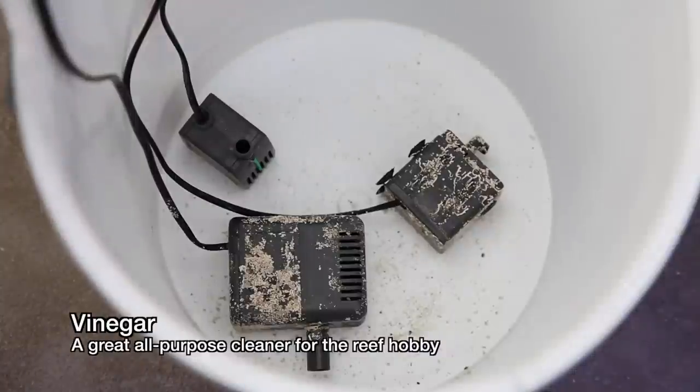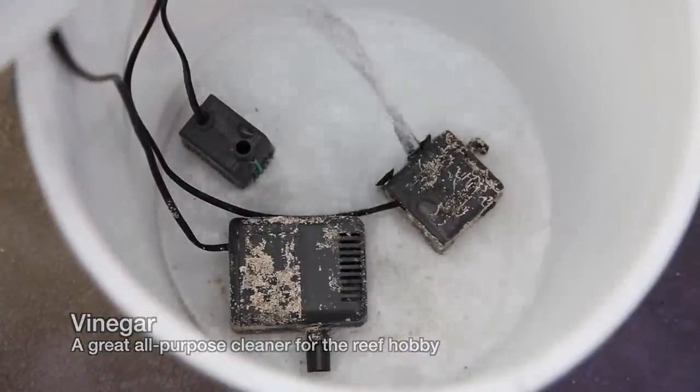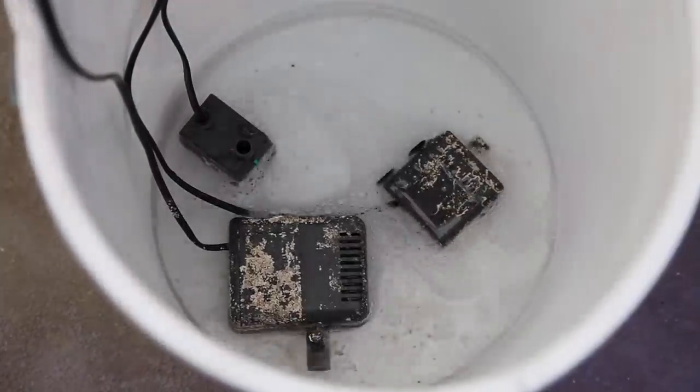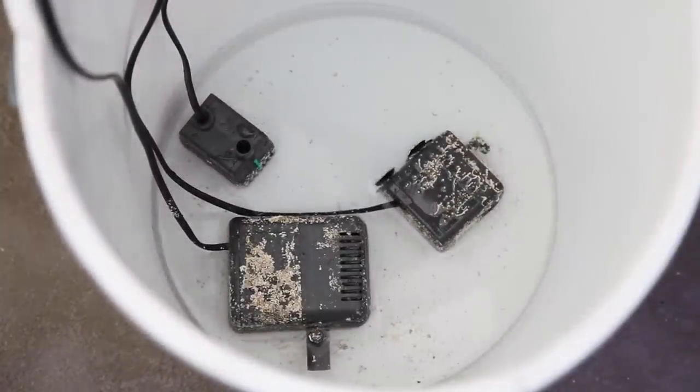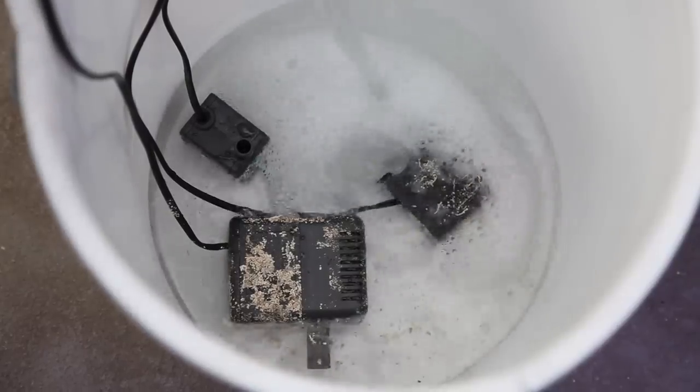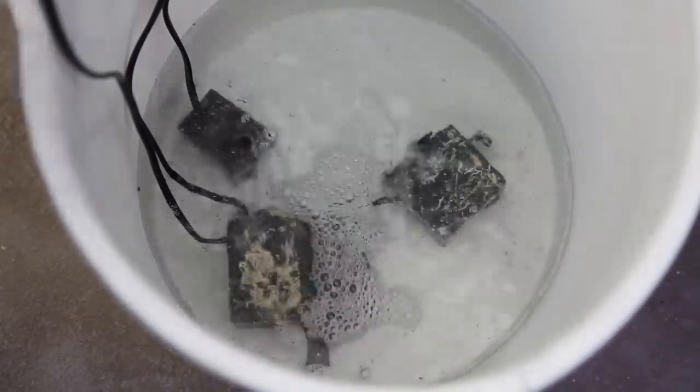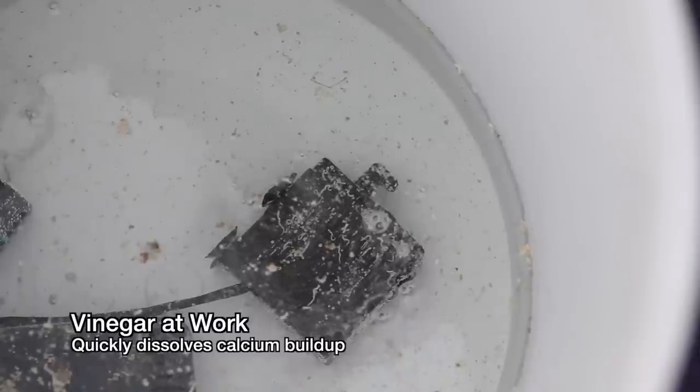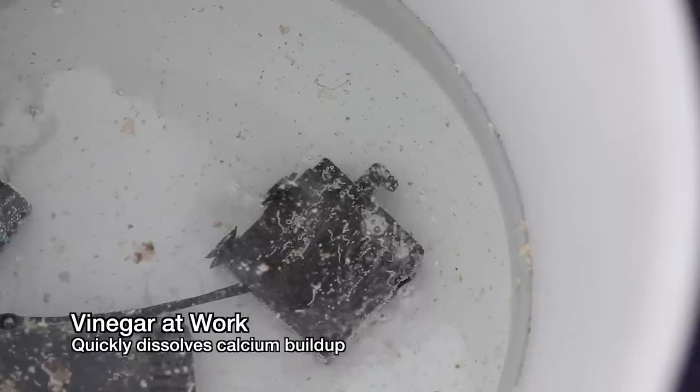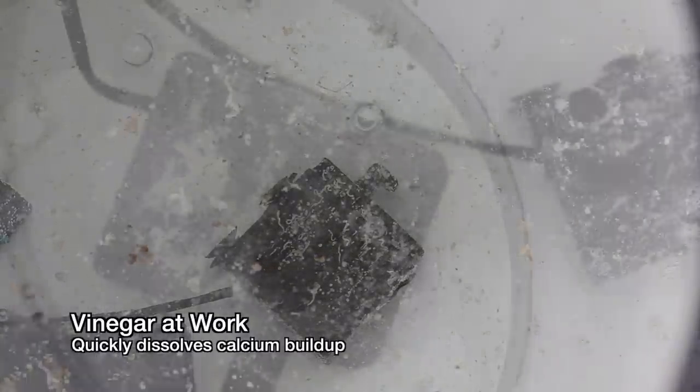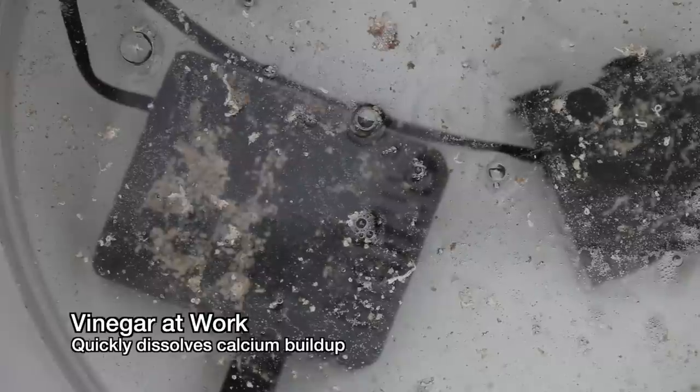Just about everything that encrusts on our equipment has some sort of calcium carbonate base. Stony corals, coralline algae, vermented snails, feather dusters, they all build some calcium-based shell or skeleton. A light acid like vinegar dissolves it right away. And the best part is, it is cheap and can be found everywhere.